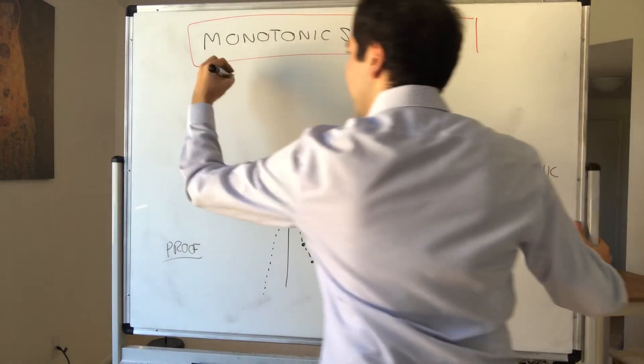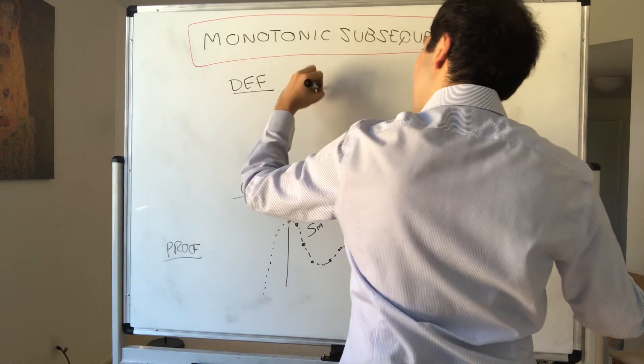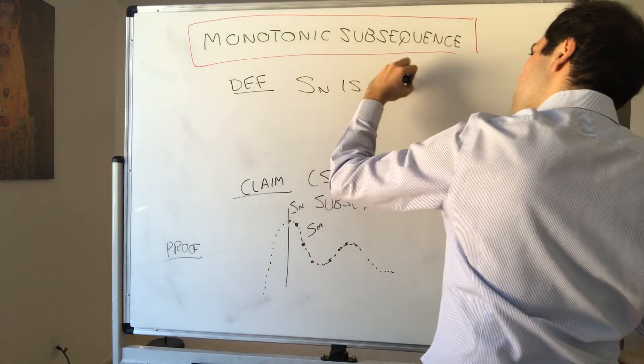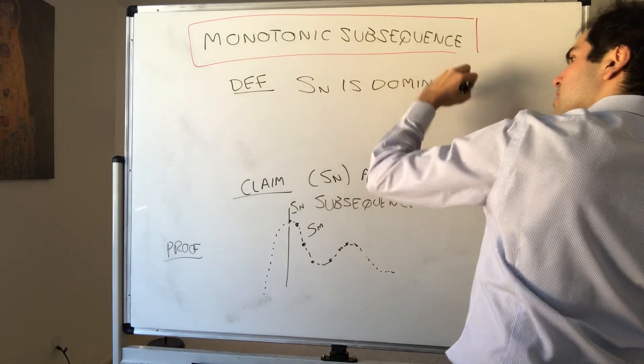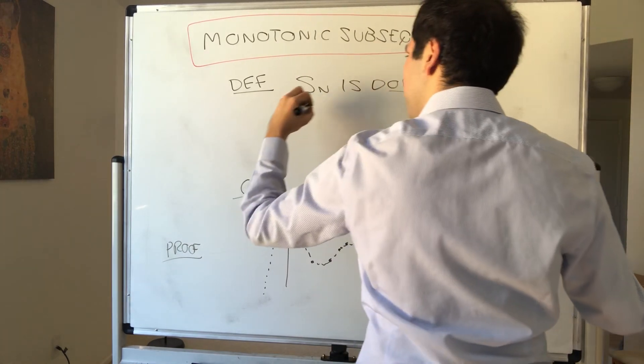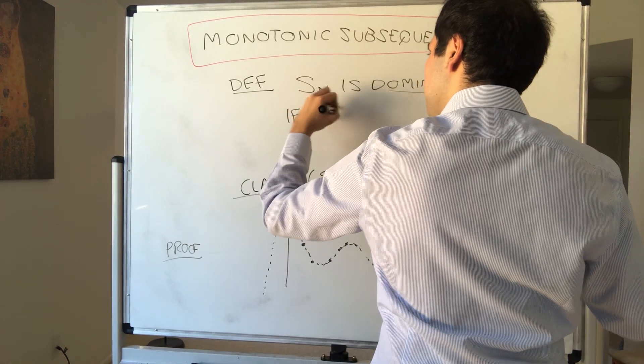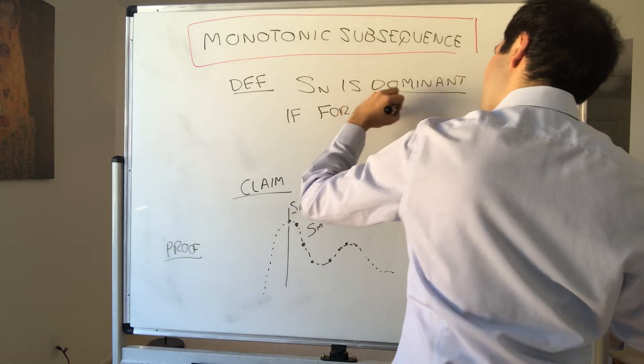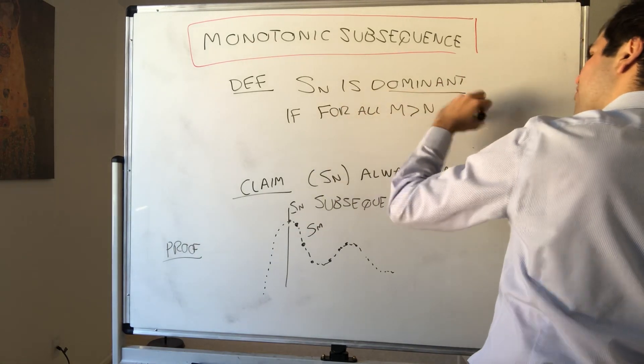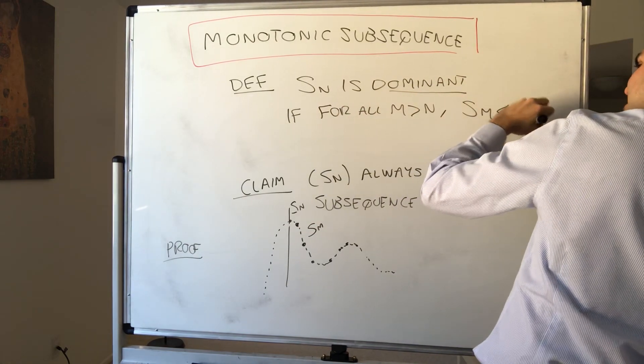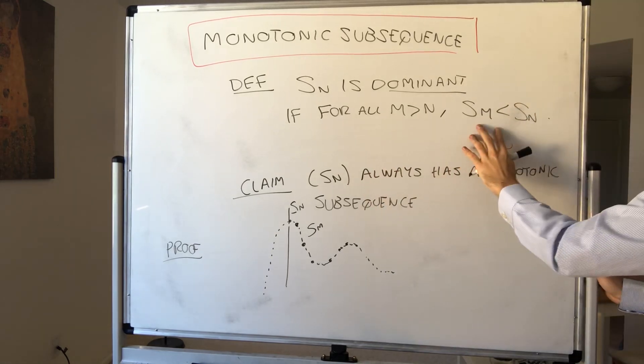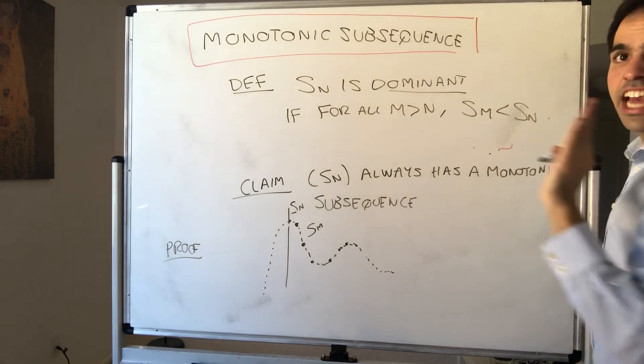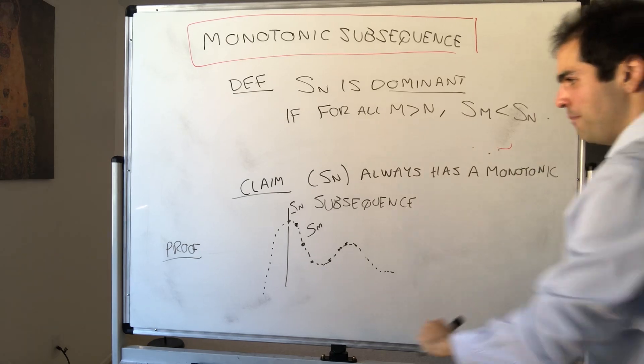Okay, so again, just formalize this to definition. Sn is dominant if, for all m greater than n, we have Sm is less than Sn. So, almost think decreasing, but here again, we're fixing n. We're not saying for all m and n.